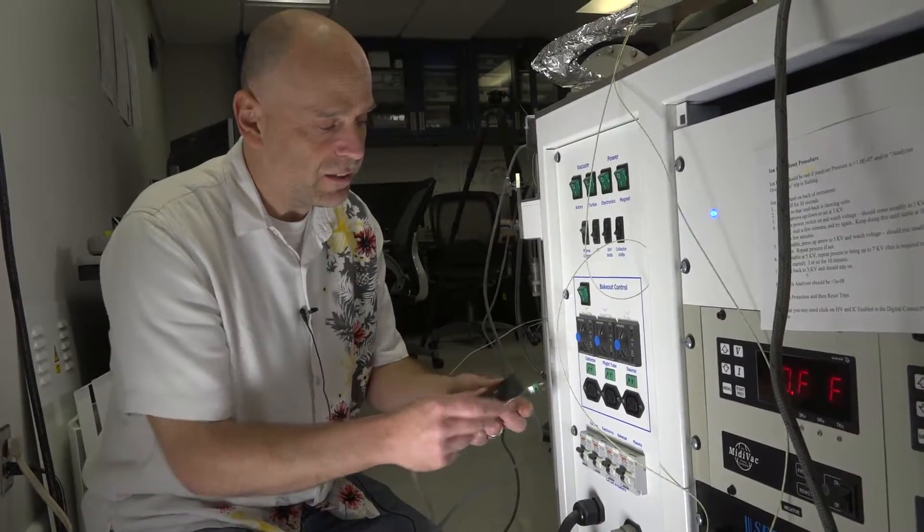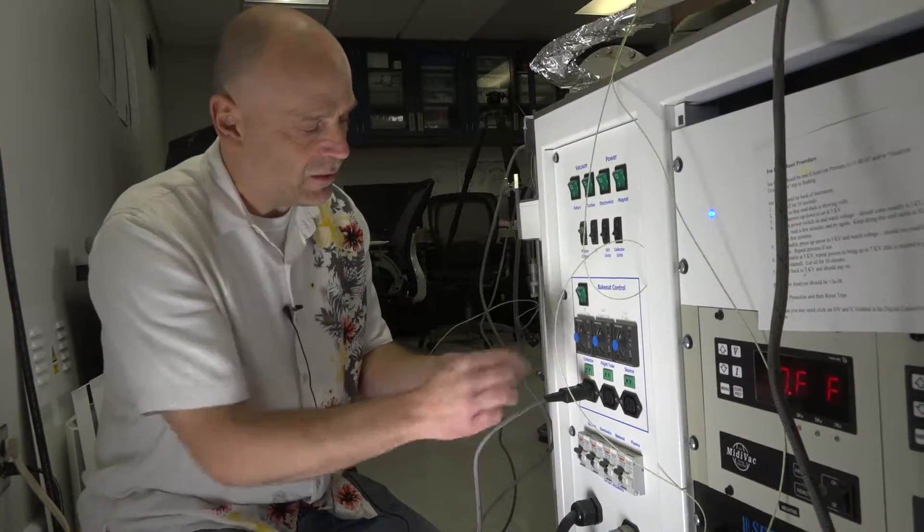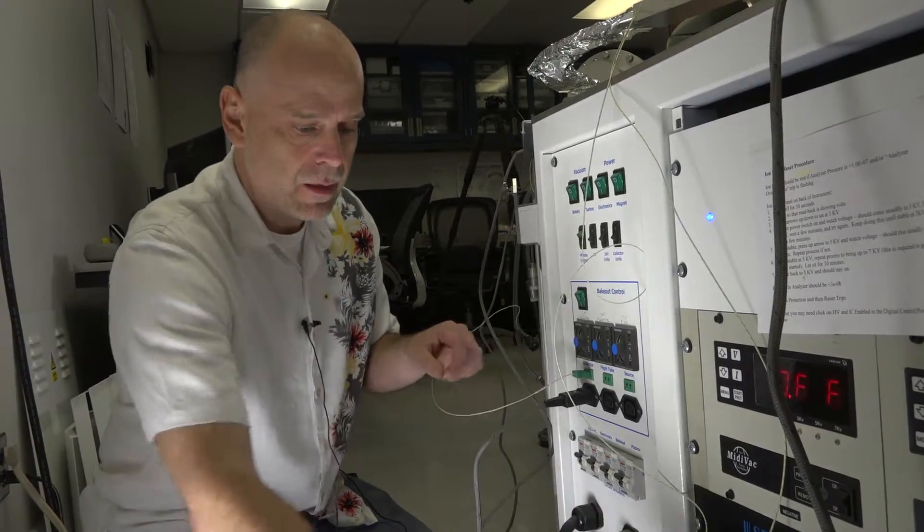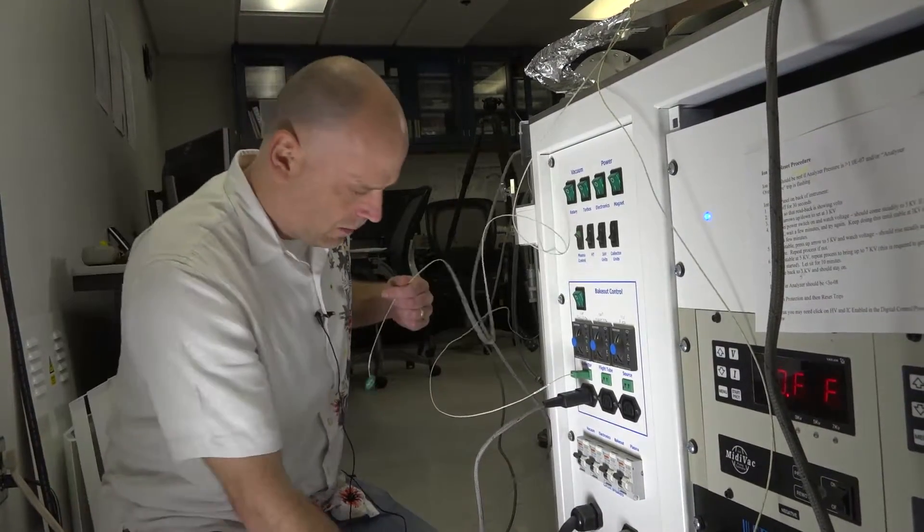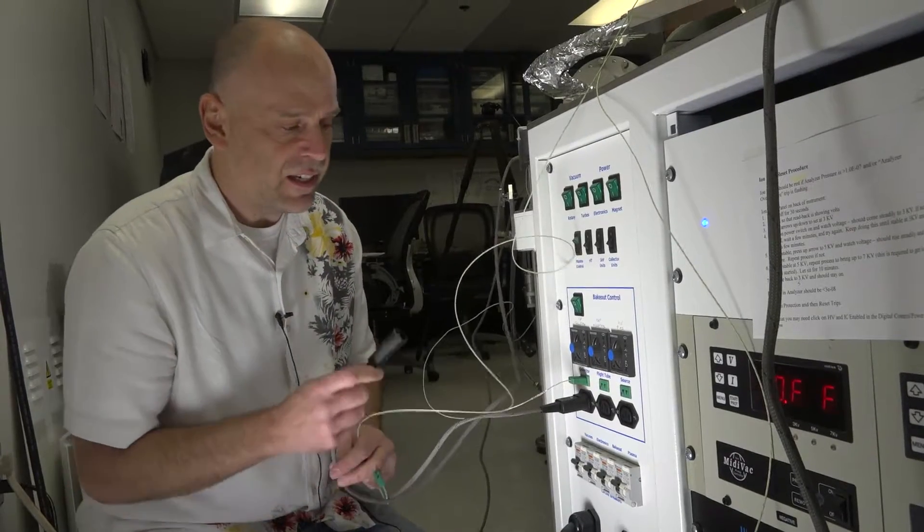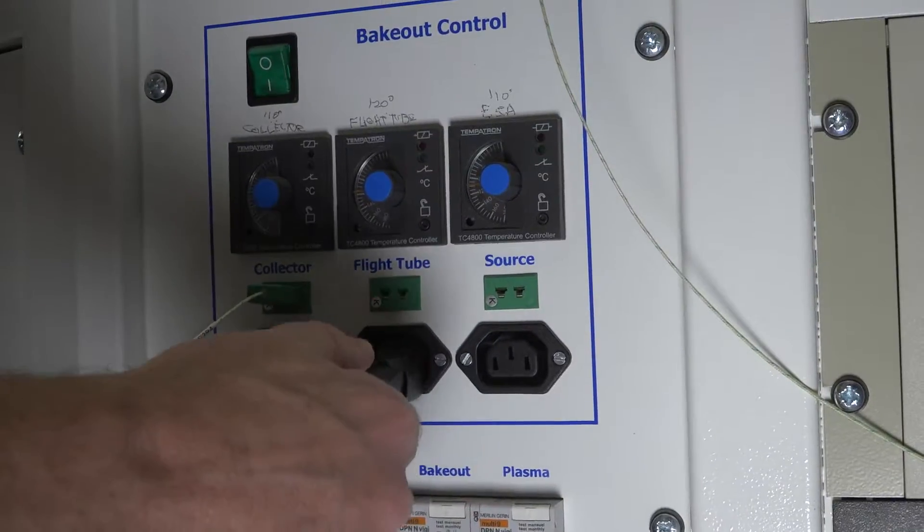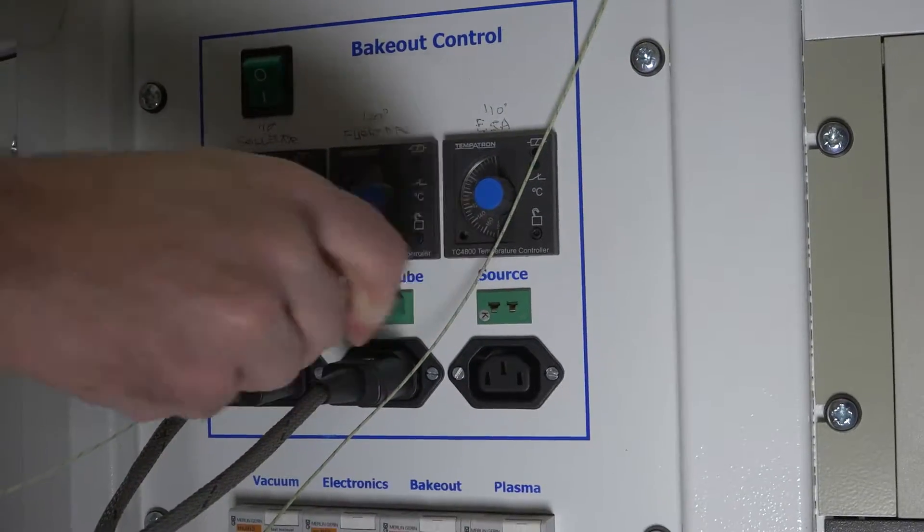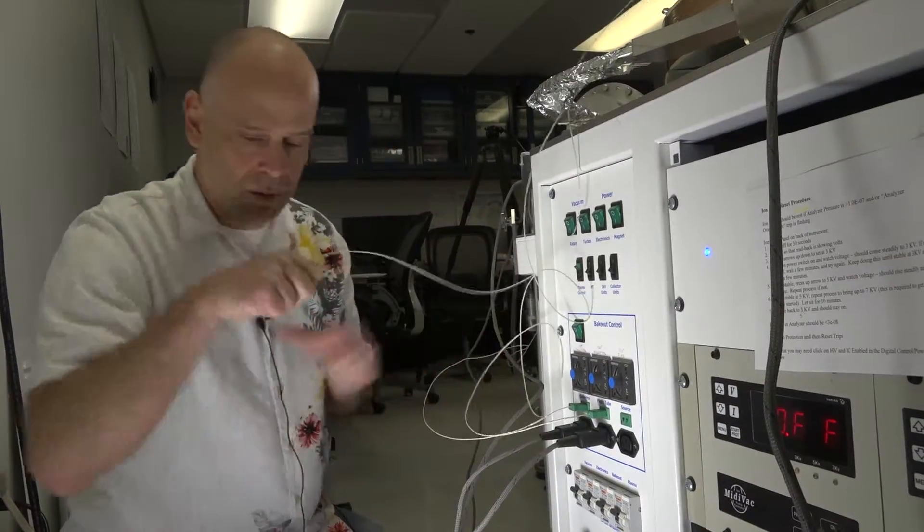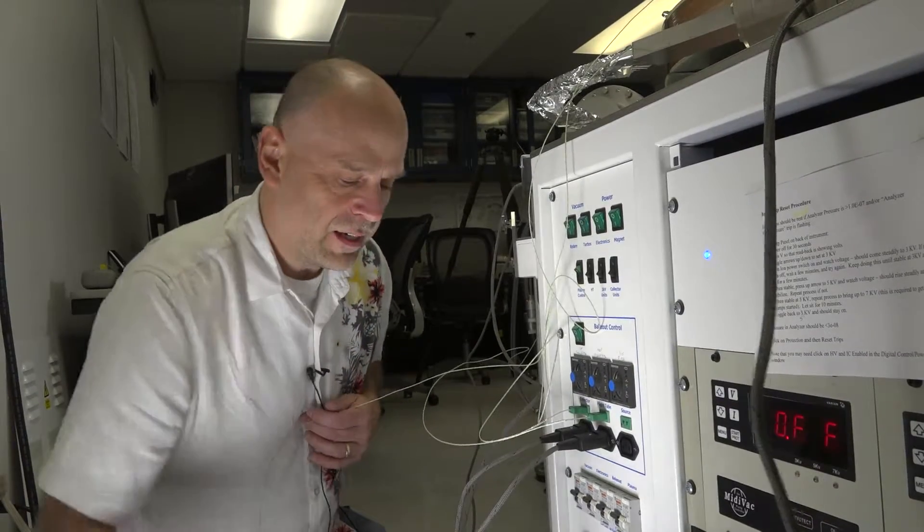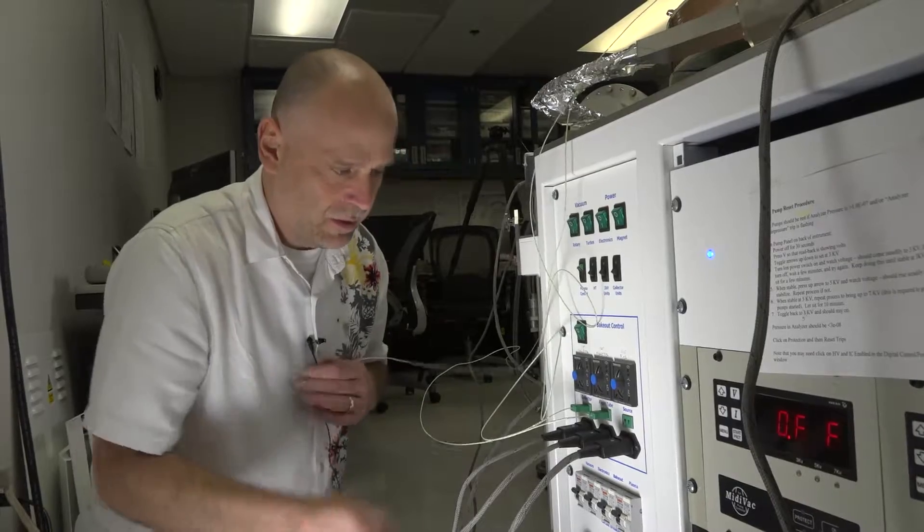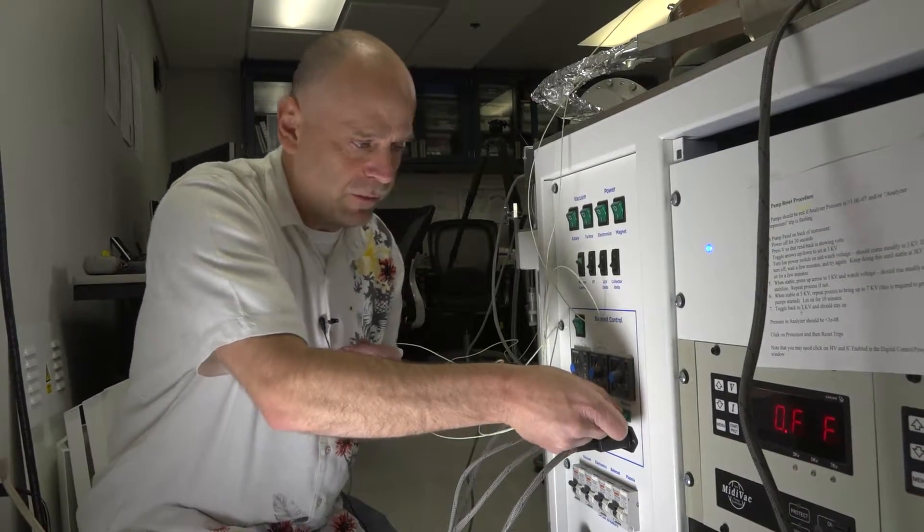Now it's time to plug everything in. First the heating element for the collector and the thermocouple for the collector. Then the heating element for the flight tube and the thermocouple for the flight tube. And finally, the heating element for the source and the thermocouple for the source.